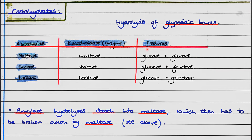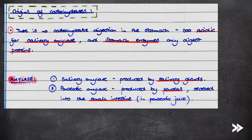Maltase produces two glucose molecules. Sucrose hydrolysis is catalyzed by sucrase to give glucose and fructose. Lactose is hydrolyzed by lactase to produce glucose and galactose. Starch, another carbohydrate, is hydrolyzed by amylase to give maltose, which then requires maltase to be hydrolyzed further into glucose.